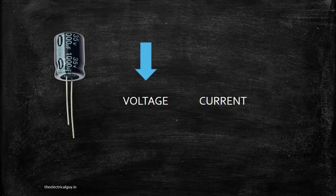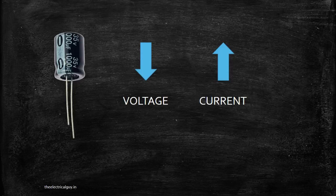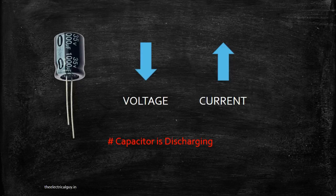Now, what happens when the voltage across the capacitor drops below the normal value? The current across it will increase. By Ohm's law, with an increase in current, the voltage will also increase back to normal. At this stage, the capacitor is said to be discharging — it releases the stored energy.